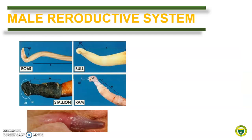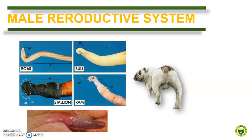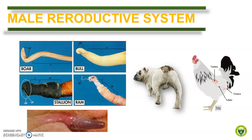The general features are the same but modifications can be observed, especially in the gross appearance and location of the organs. For example, in most mammals the testis are located outside the main trunk or body of the animal and enclosed inside a sack called the scrotum. This is in contrast to birds, with testis located within the coelomic cavity inside their body. This among others will be tackled and compared in this module.